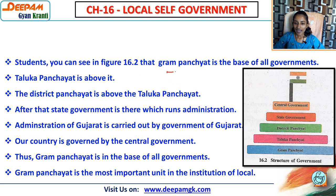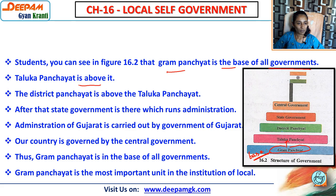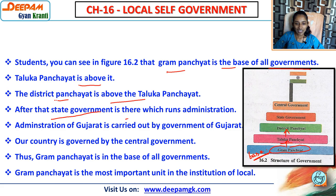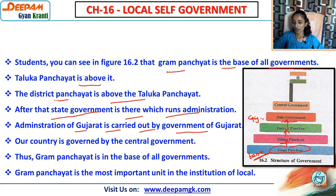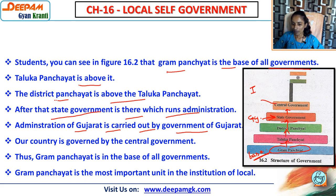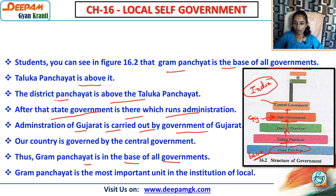You can see in the figure that gram panchayat is the base of all the government - it is at the bottom. Taluka panchayat is above it, then district panchayat above the taluka panchayat. Above the district government we have the state government, which runs the administration at the state level. The administration of Gujarat is carried out by the Government of Gujarat. Our country is governed by the central government above the state government.